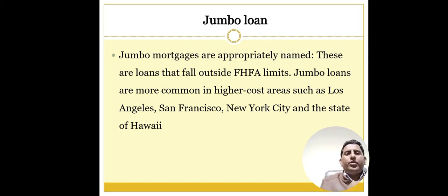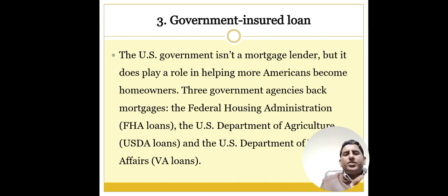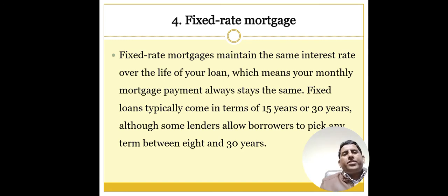On government-insured loans, the US government is not a mortgage lender, but it plays a role in helping more Americans become homeowners. Three government agencies back mortgages: the Federal Housing Administration (FHA) loans, the US Department of Agriculture (USDA) loans, and the US Department of Veterans Affairs (VA) loans. Another loan type is the fixed-rate mortgage, which maintains the same interest rate over the life of your loan, meaning your monthly mortgage payment always stays the same.